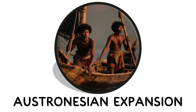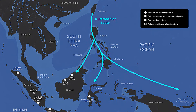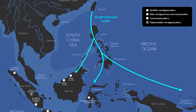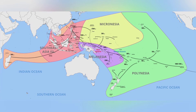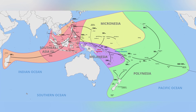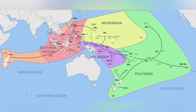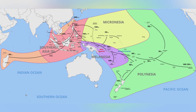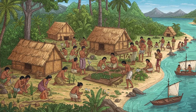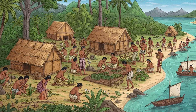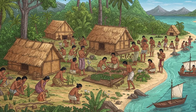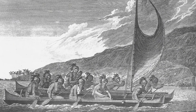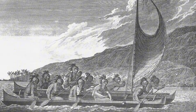Austronesian Expansion. The Austronesian Expansion describes the spread of seafaring peoples from Taiwan across vast areas of the Pacific and Indian Oceans, beginning around 3,000 years ago. Using advanced canoe technology and sophisticated navigation skills, Austronesian speakers migrated through the Philippines and Indonesia, eventually reaching remote islands such as Hawaii, Easter Island, and New Zealand. Others traveled westward across the Indian Ocean, settling Madagascar off the coast of Africa. These migrations carried shared languages, agricultural practices, and maritime traditions across thousands of miles of open ocean. Island communities adapted to diverse environments, from coral atolls to volcanic islands, developing rich cultural traditions.